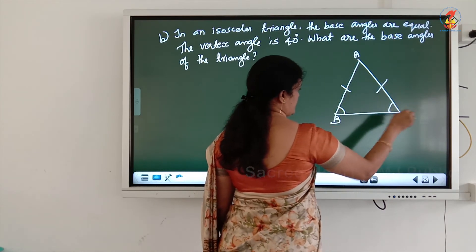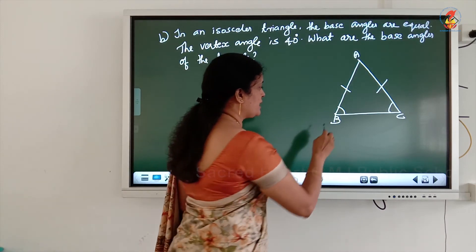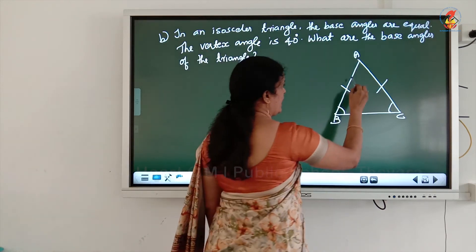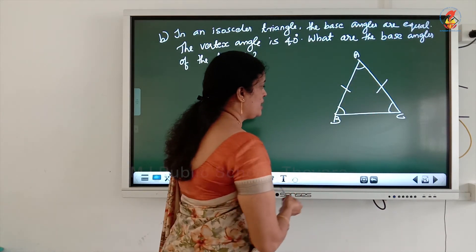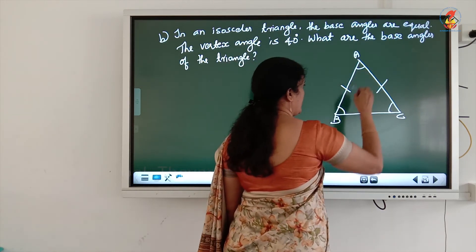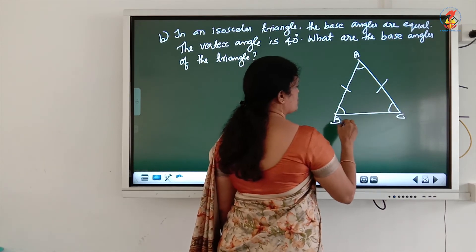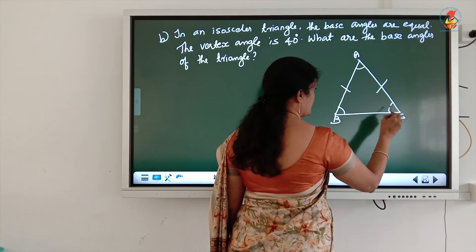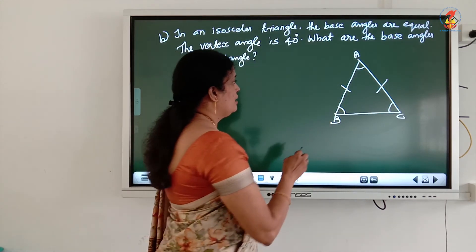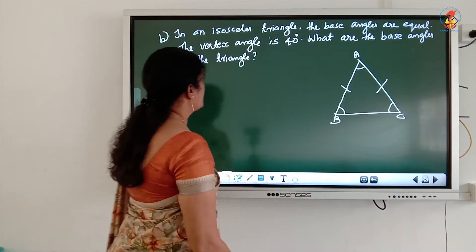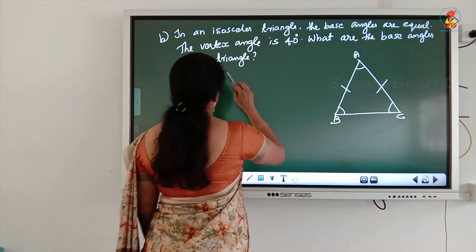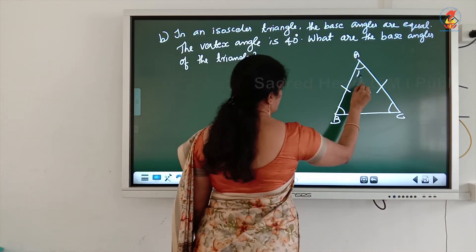The angles opposite to equal sides — angle B and angle C are called base angles. Angle A is the vertex angle. Angle B and angle C are base angles because AB and AC are equal sides. These two angles are opposite to the equal sides. Angle A is the vertex angle.